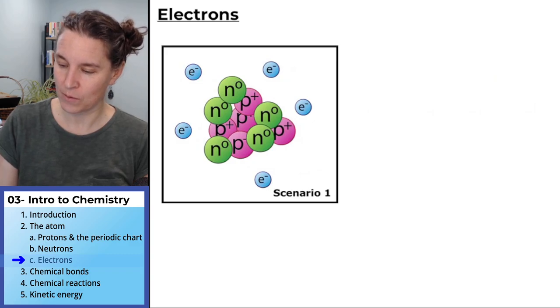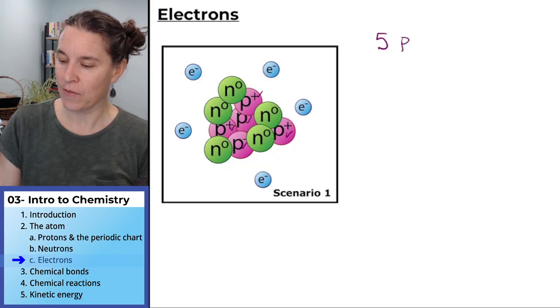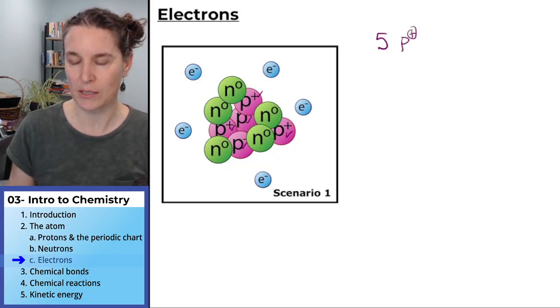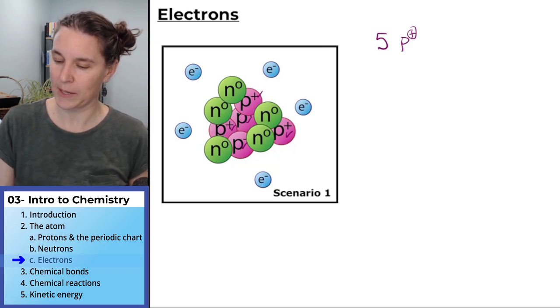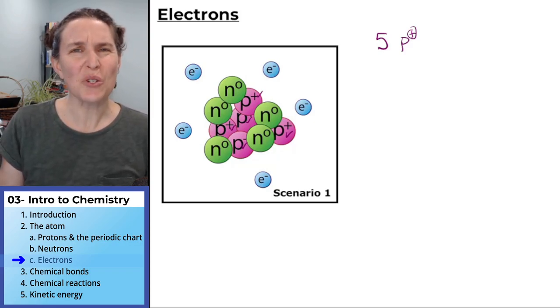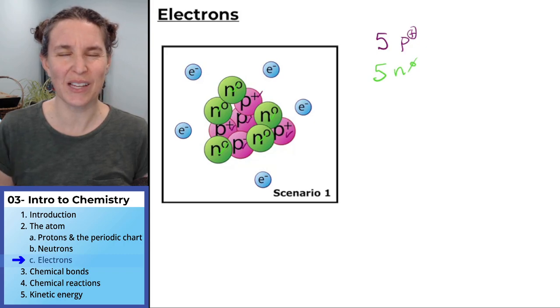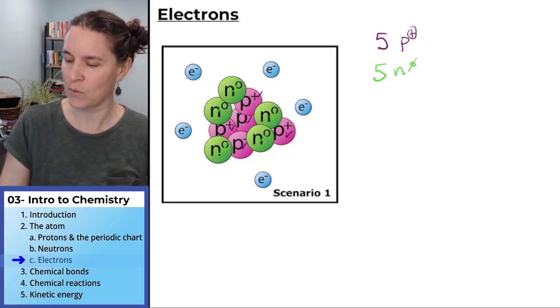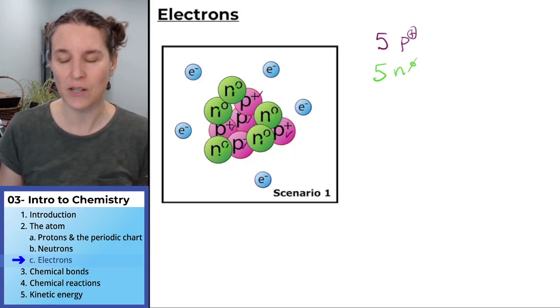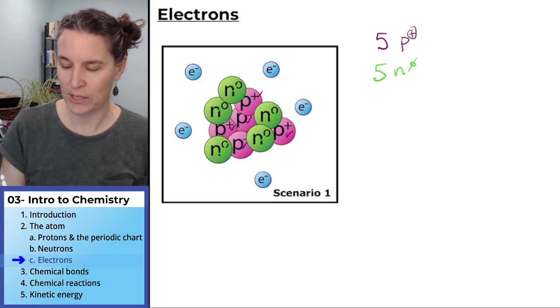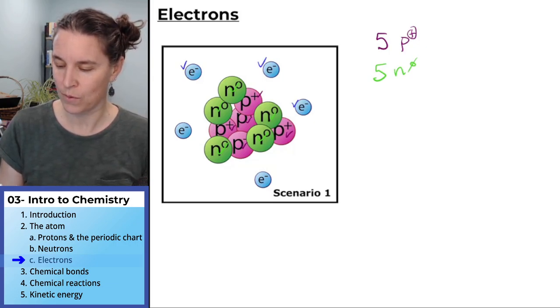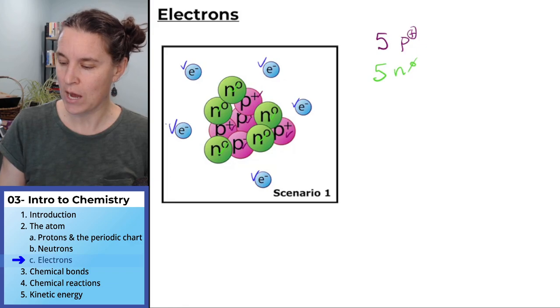In this case, I'm just going to go through and be like one, two, three, four, five. There's five protons. Let's count neutrons just for the heck of it. One, two, three, four, five. Five neutrons. We might as well have that information on hand. And now let's count electrons. One, two, three, four, five electrons.